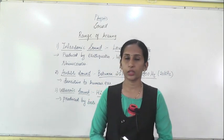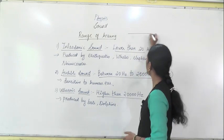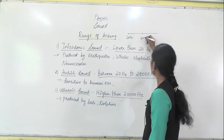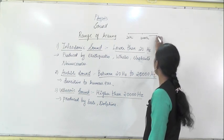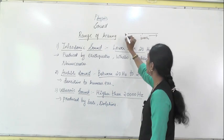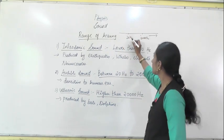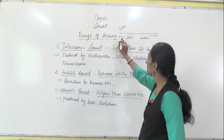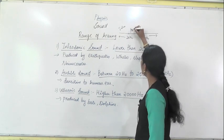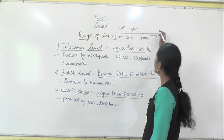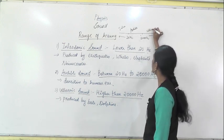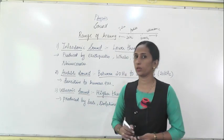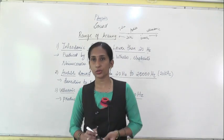These are the ranges of hearing. If you make a number line: here is 20 hertz, in between is 20,000 hertz, and above that is higher. Lower than 20 hertz is infrasonic. Between 20 and 20,000 hertz is the audible range. Higher than 20,000 hertz is ultrasonic. This way you can easily keep in mind the ranges of hearing. In the next video, you will study about the applications of ultrasonic. Thank you.